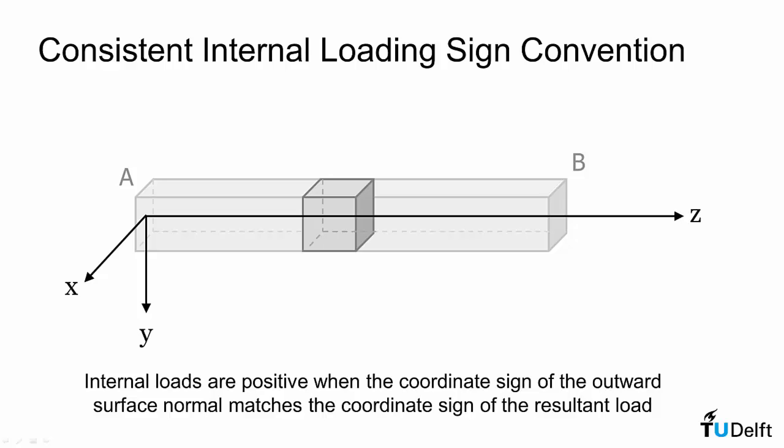And if we look at the right-hand face and look at the positive loading, the outward normal is in the positive z direction. So we get a positive shear force acting in the positive y, because you have a positive outward normal, positive resultant force. And a moment will be counter-clockwise, positive outward normal, positive counter-clockwise moment.